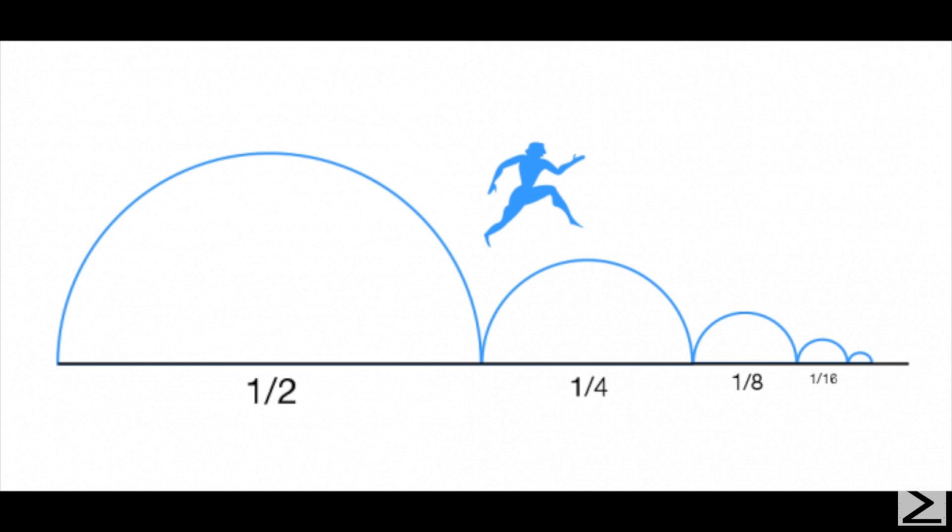For example, since the ancient Greeks had known that the sum of one-half plus one-quarter plus one-eighth and so on approached one, but since they only worked with finite series, they couldn't assume that it would converge to one.